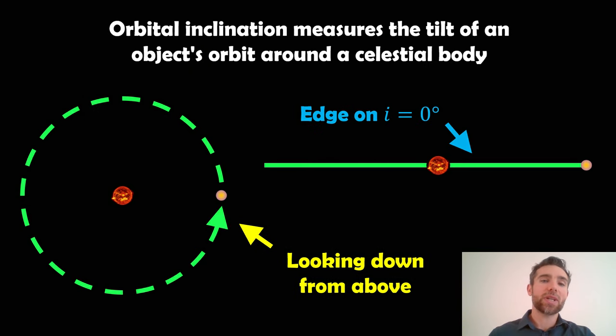So the first thing we need to consider really is the orbit inclination. Now on the left hand side there you're looking top down onto an orbit and that's a circular orbit. But if we look edge on then we're just looking at the plane of the orbit and that example there has an inclination angle of zero.